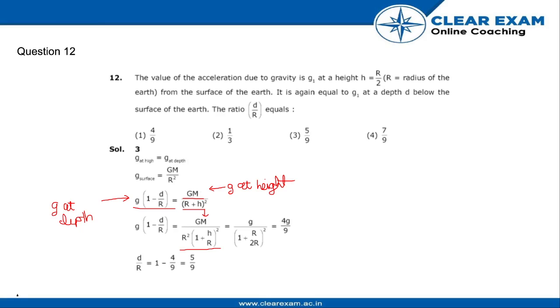GM by r square is nothing but small g, which is g at surface. So g at height is equal to g by 1 plus h by r whole square.